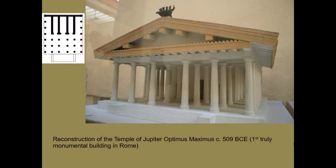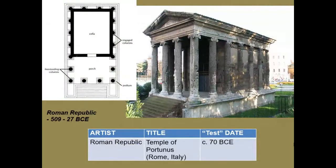In the earliest phases of Roman architecture we can see influence from the Etruscan style, but we also start to see more elaboration and some aspects of Greek architecture as well. The first piece to know for the purposes of the test is the Temple of Portunus, found in the city of Rome. It is very different from a Greek temple in some respects.